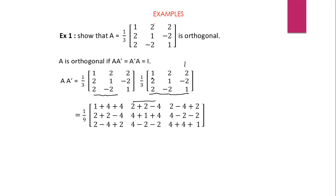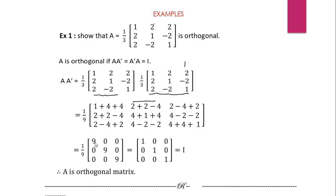Continuing the multiplication: second row to the first column gives 2 plus 2 minus 4, equaling 0. The diagonal entries all yield 9, and the off-diagonal entries all yield 0. So after simplification, we get the matrix with entries 9, 0, 0 in the first row; 0, 9, 0 in the second row; and 0, 0, 9 in the third row. Now 1 by 9 is multiplied to every element, so 9 upon 9 equals 1 for each diagonal entry, giving us the identity matrix.